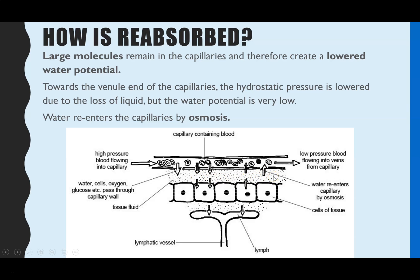As a result, the water in the tissue fluid moves back into the capillaries by osmosis, down the water potential gradient. There's no more liquid being forced out at this end because the hydrostatic pressure has dropped very low — so much liquid has been forced out. At the venule end we have low pressure in the capillary and a very negative water potential, so no more liquid is forced out but water is reabsorbed back into the capillaries by osmosis.